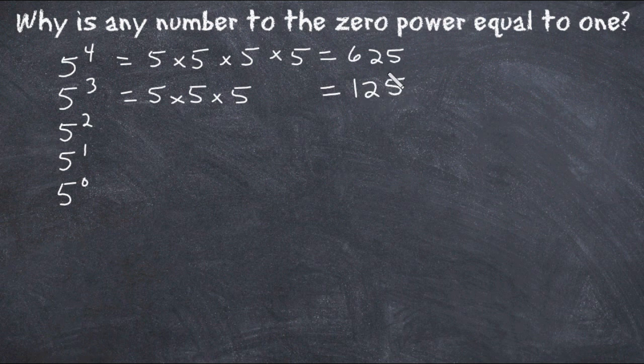Now right away, here's what we should notice. As we decrease the power by one, meaning we multiplied by five one less time, we started with 625 but then we had something that was five times smaller, and that's because we had one less five.